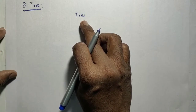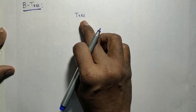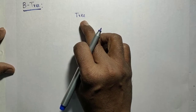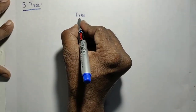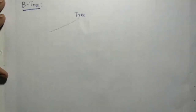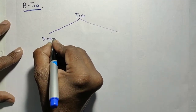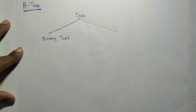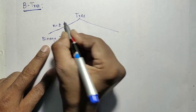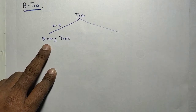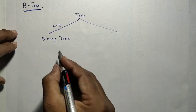We can classify trees based on the number of children for each node. The binary tree is one such classification, where the maximum number of children is restricted to at most two. Based on the values stored in a binary tree, we can further classify it.